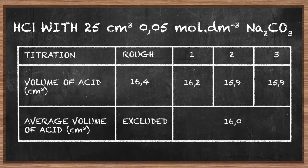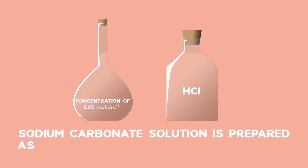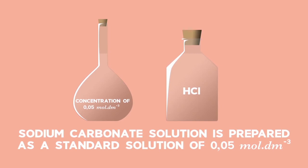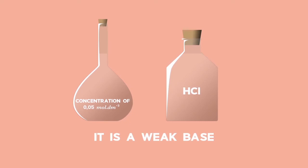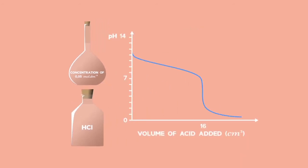We start with the titration of a standard solution of sodium carbonate and a solution of hydrochloric acid of unknown concentration. This is a titration of a weak base with a strong acid. Sodium carbonate solution is prepared as a standard solution of 0.05 moles per decimetre cubed. It is a weak base. Hydrochloric acid is a strong acid. The initial pH of the solution will be about pH 10.